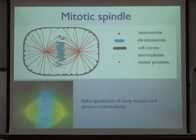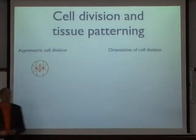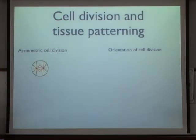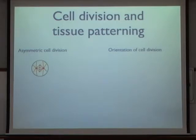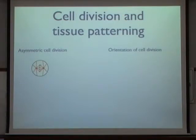The mitotic spindle plays a number of important roles as cells divide and as tissues form. I want to highlight three examples of how the geometry, orientation, and position of the spindle are essential for organizing patterns in developing tissues. This organization of spindle position and orientation can be discussed on the basis of how motor proteins act on the spindle. One important question is: what is the role of the spindle in determining cell division outcomes?